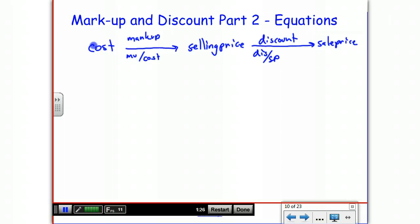So it allows us to have some equations. The first one is an equation that deals with markup, and that is the cost of an item times the markup percent, MU meaning markup, and you're going to write this as a decimal equals the actual markup.